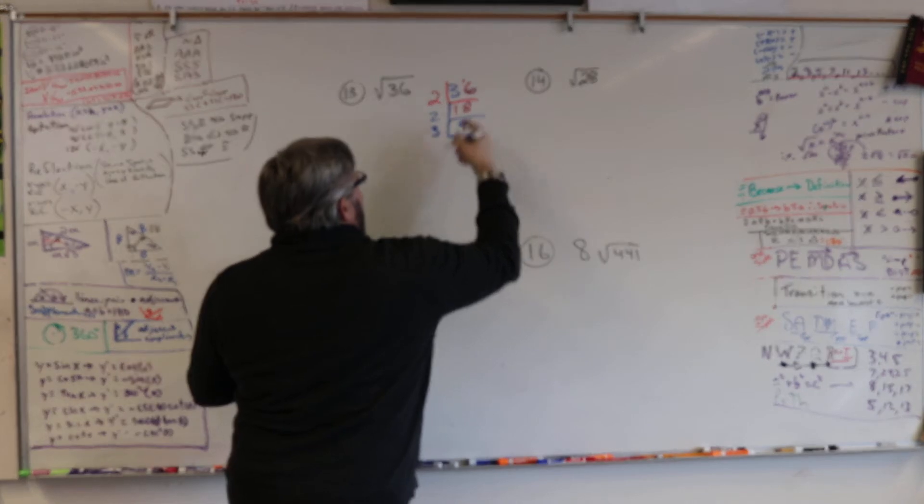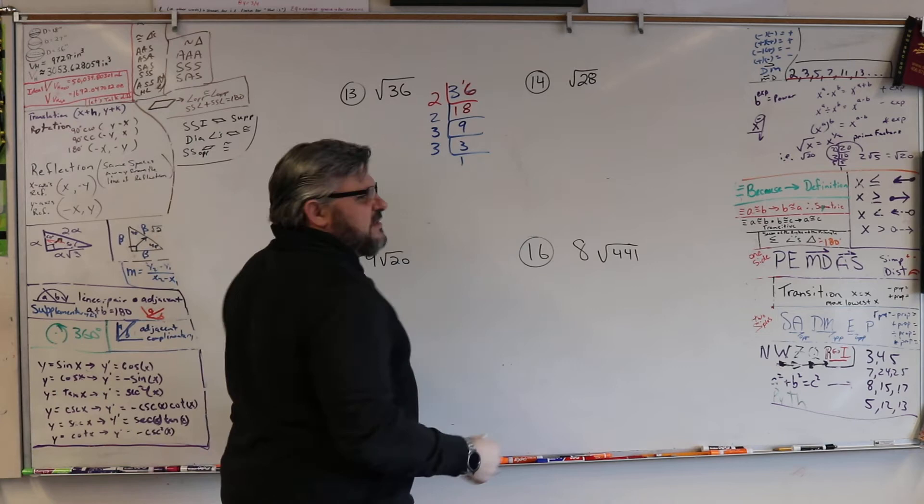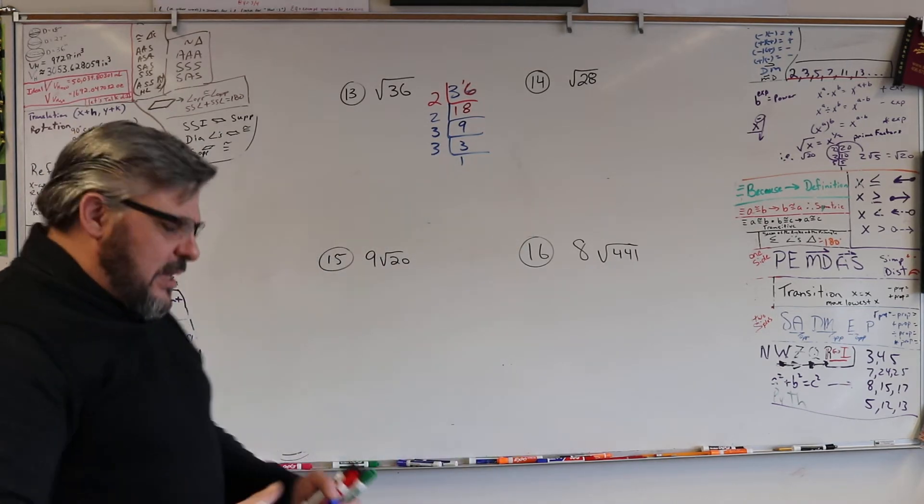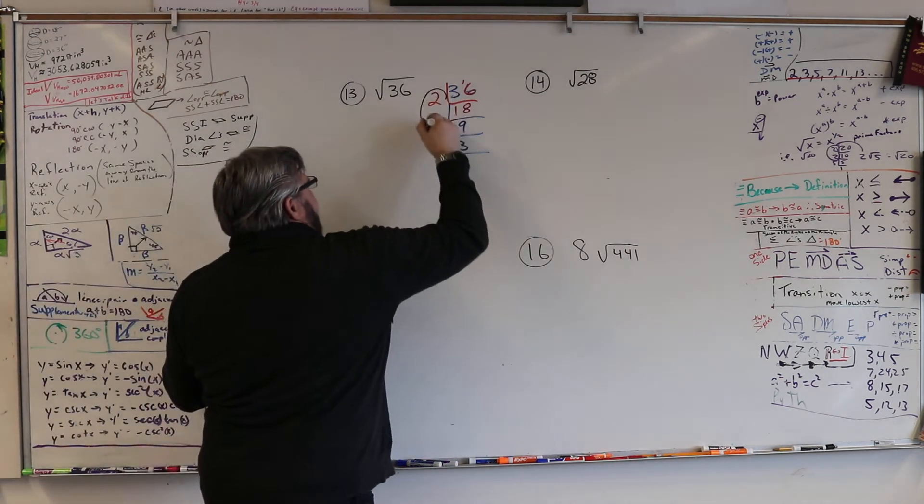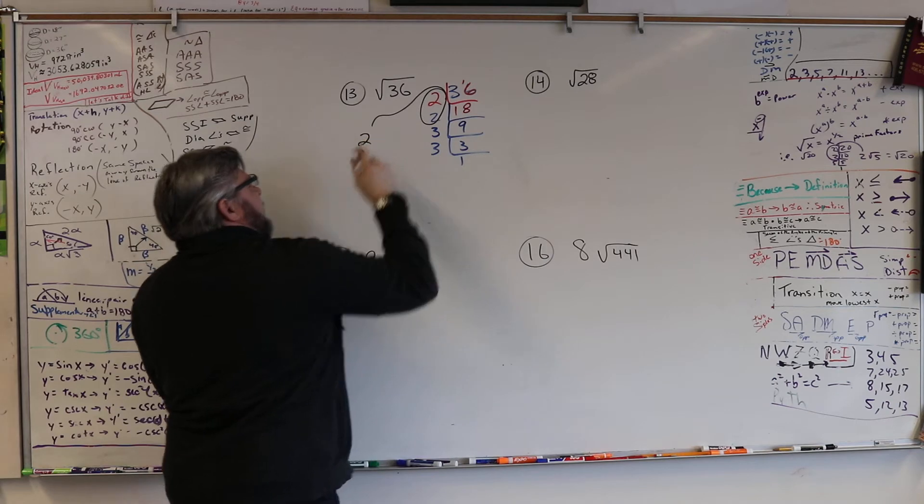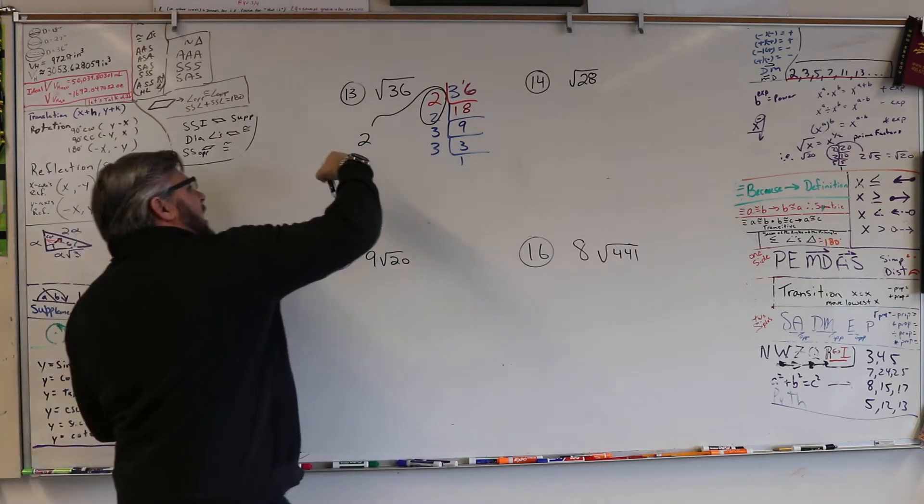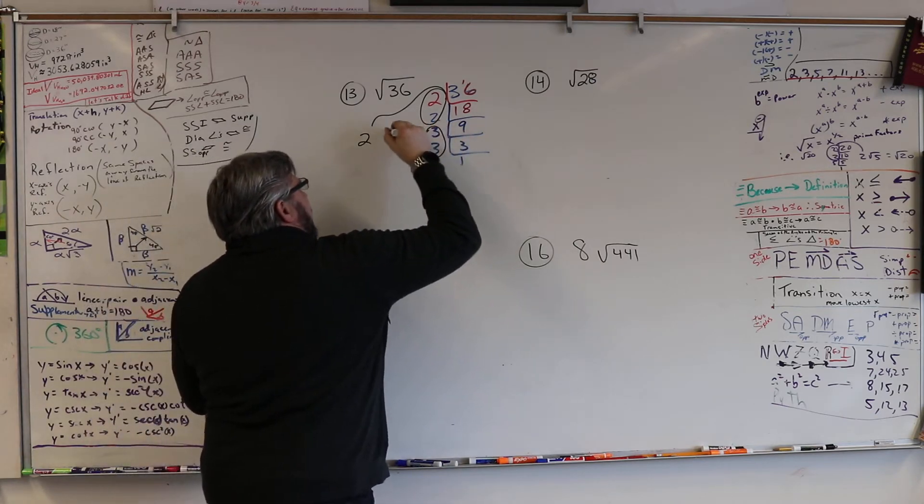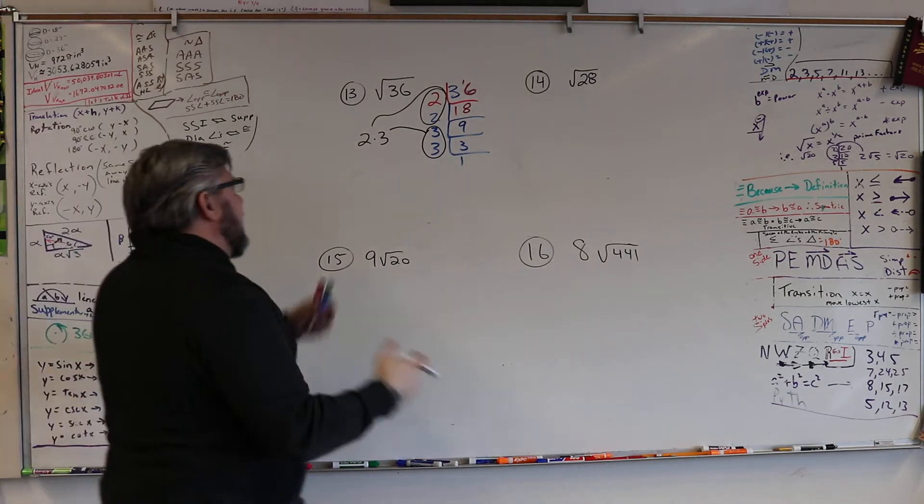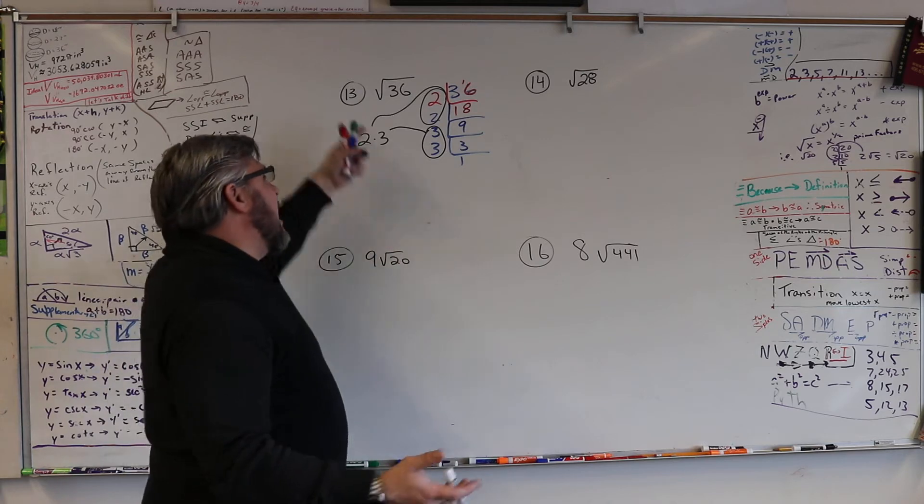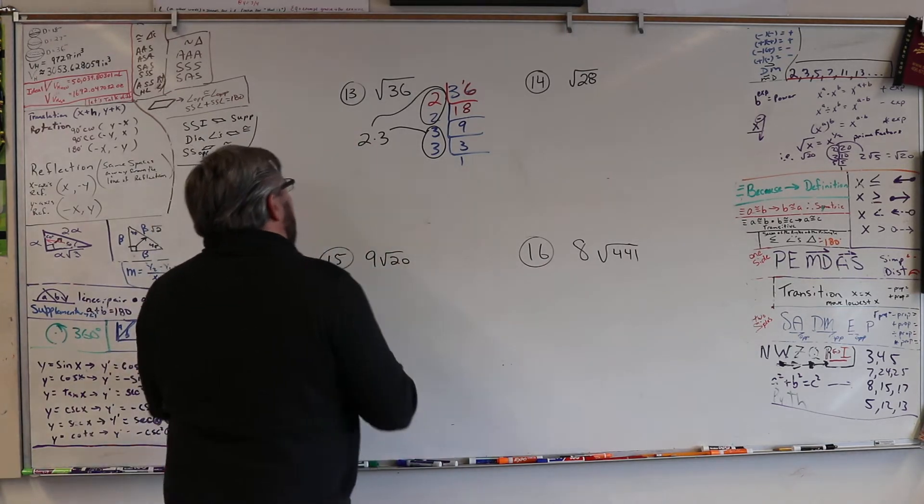So then I do 3 times what is 9? It's 3. And I say, well, what goes into 3? 3, one time. When you get to 1, you're done. And now we just pick out our pairs. So I have a pair of 2s. So I take one of them out. Every time you circle a pair, you pull it out. I circle the pair, I pull it out. And those are multiplied against each other. There's nothing not circled, so there's nothing left in the radical. So it's just 2 times 3, which is 6.